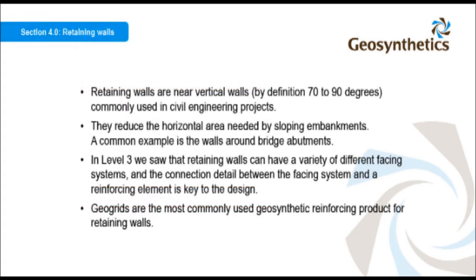Retaining walls are near vertical walls — by definition, 70 to 90 degrees — and are commonly used in civil engineering projects. They reduce the horizontal area needed by sloping embankments. A common example is the walls around bridge abutments. Retaining walls can have a variety of different facing systems, and the connection detail between the facing system and the reinforcing element is key to the design. Geogrids are the most commonly used geosynthetic reinforcing product for retaining walls.